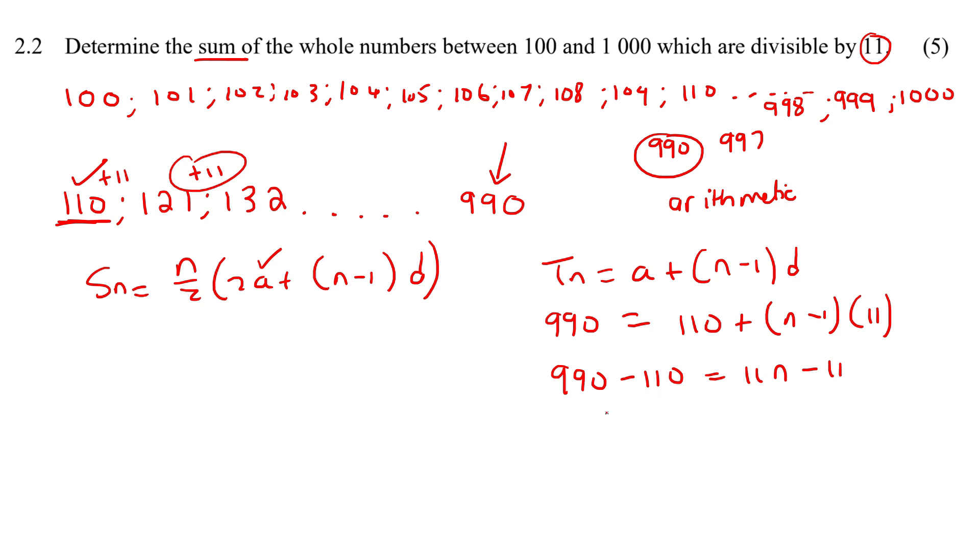And we now have 880 on the left. 11n minus 11. Take the 11 over, it becomes 891. Divide both sides by 11 and you get 81.